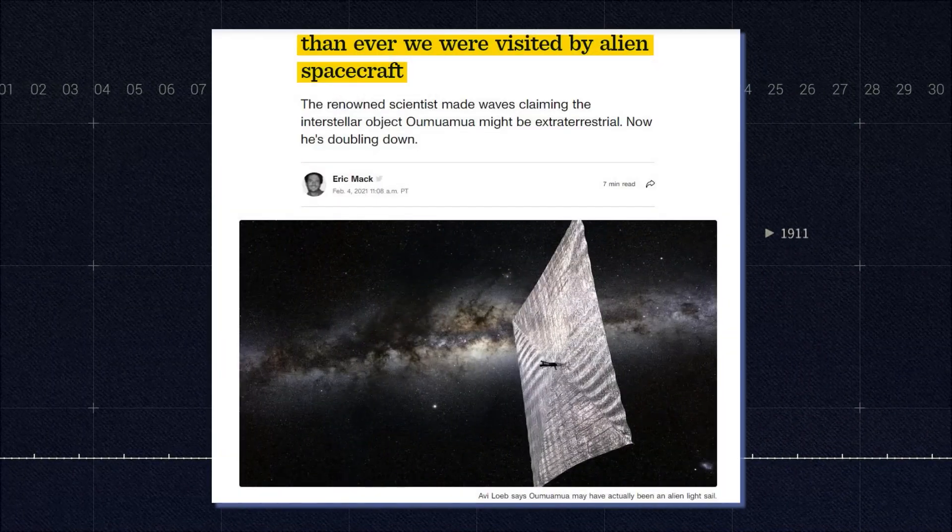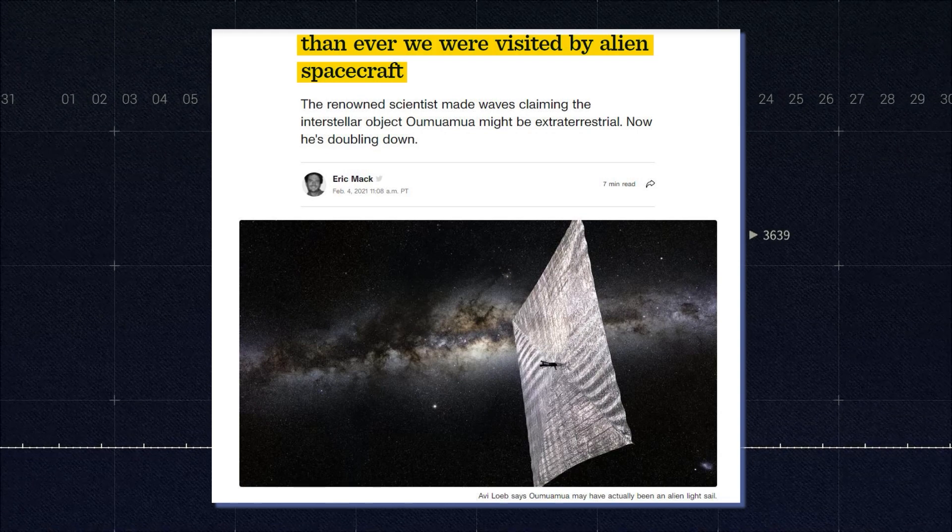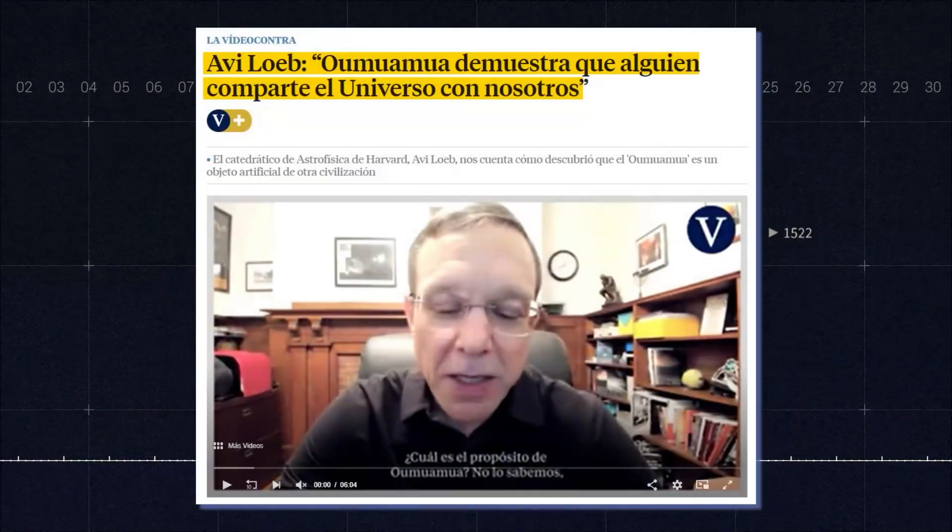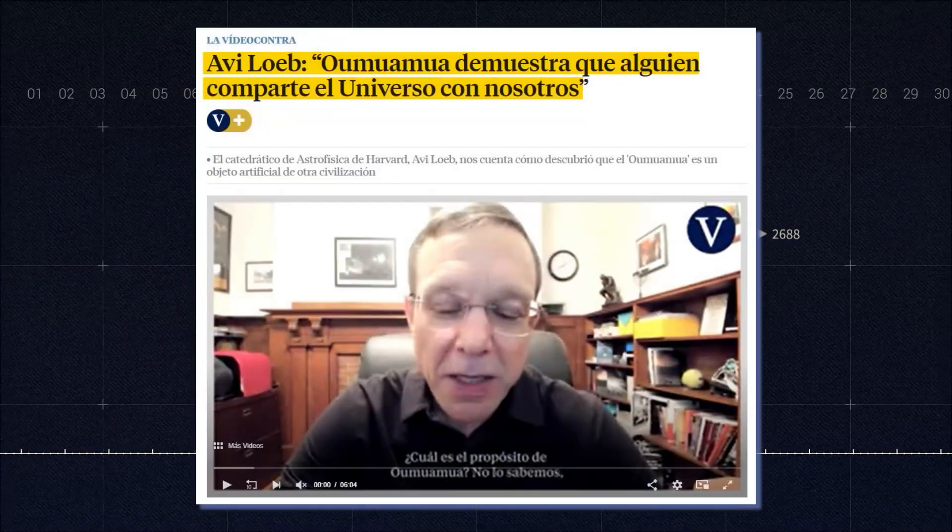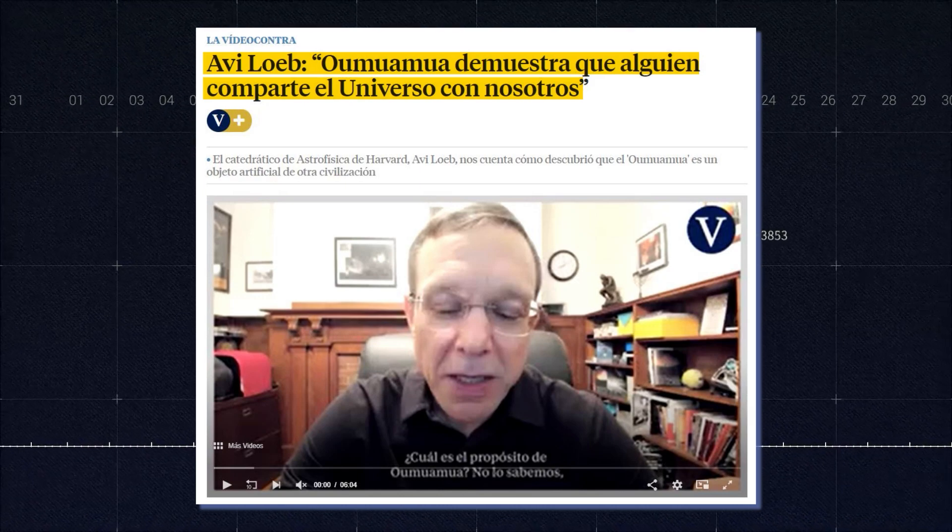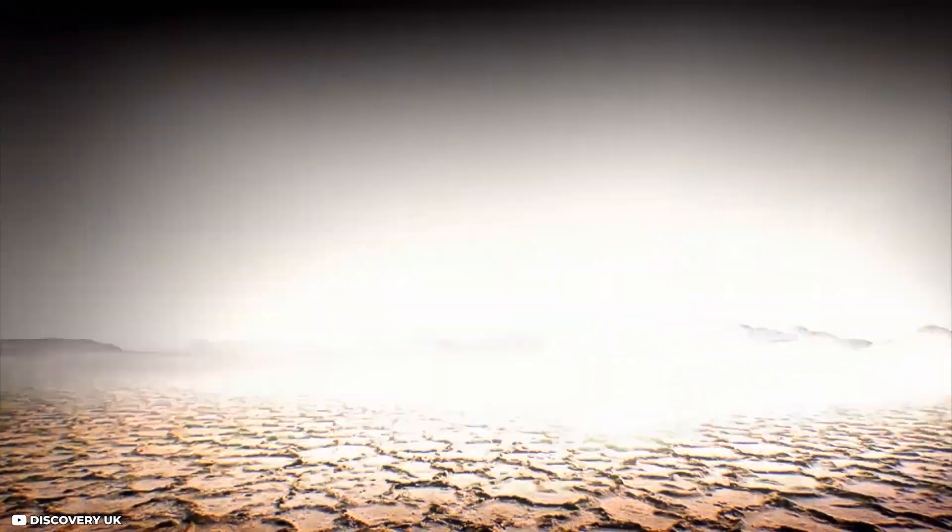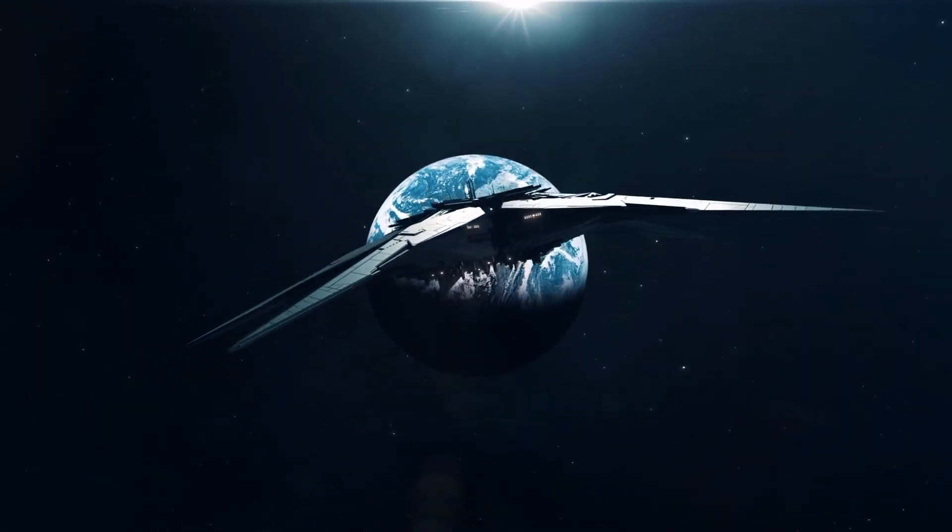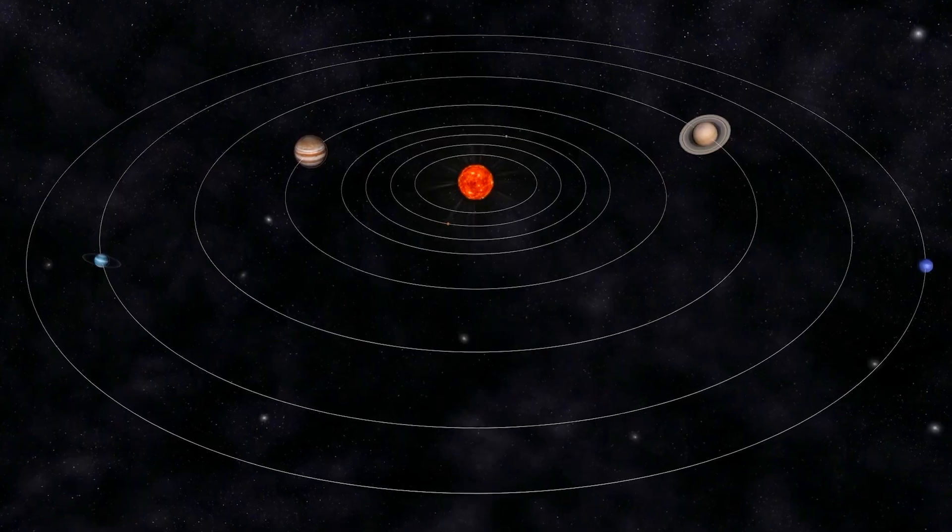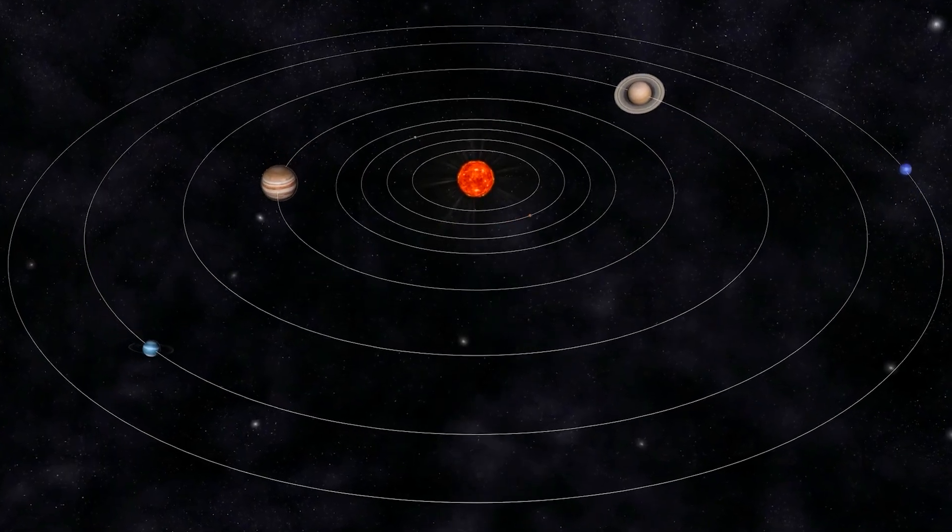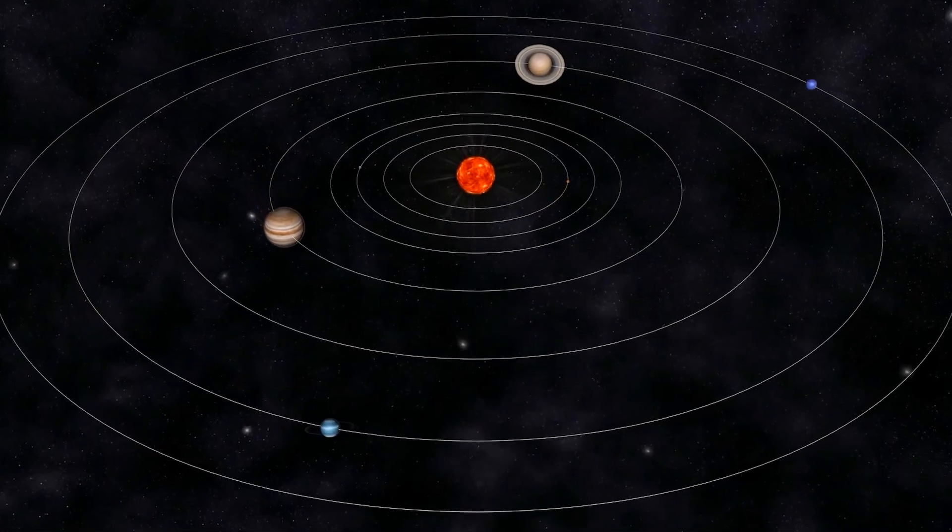The scientist also published a paper alleging that the interstellar asteroid Oumuamua was humanity's first contact with an alien intelligence artifact. He is now focusing on Proxima b, which many alien hunters believe is a great contender for indications of intelligent extraterrestrial life outside the solar system.